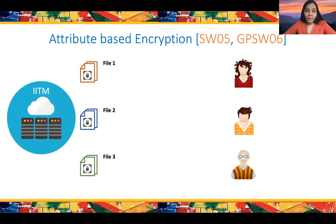Let's start by defining the problem. ABE stands for Attribute-Based Encryption. This is a notion introduced by Sahai and Waters, and it's a generalization of public key encryption introduced to enable fine-grained access control on encrypted data.